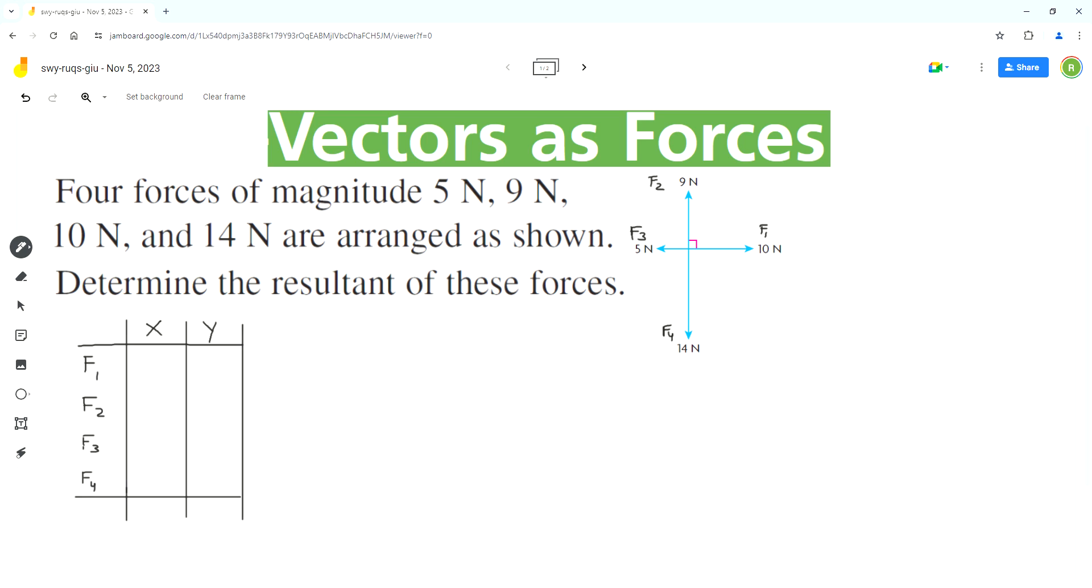So let's start with F1. F1 is directed to the right side, so the x component is 10 newtons and it's positive because it's directed to the right side. The typical vector notation we use is that any vector directed to the right side and upward is positive, and any vector directed to the left side or in the downward direction is negative.